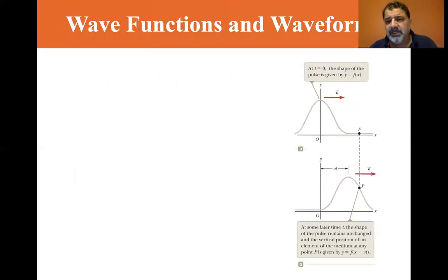Now wave functions and wave forms. Let's look at what the graph says. If T equals zero, the shape of the pulse is given by Y equals F of X. And at some later time T, the shape of the pulse remains unchanged and the vertical position of an element of the medium at any point P is given by Y equals F of X minus VT. We have the Y position is the height of the wave pulse and X is just where it is, where the wave pulse is occurring or it's actually the position of the rope or cord or whatever. It looks like it's a cord.